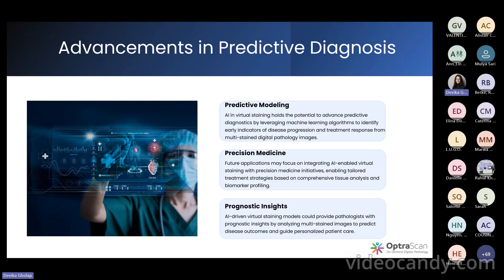Future applications may focus on integrating AI-enabled virtual staining with precision medicine initiatives, enabling tailored treatment strategies based on comprehensive tissue analysis and biomarker profiling. Third but not least is prognostic insights — these models could provide pathologists with prognostic insights by helping them predict disease outcomes and guide personal care. All of this leads to increased efficiency of diagnostics due to a reduction in time needed for re-staining.